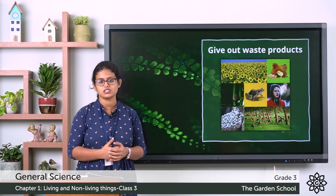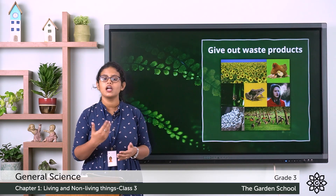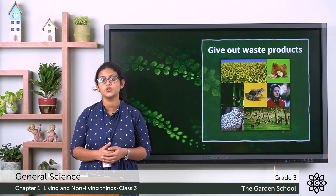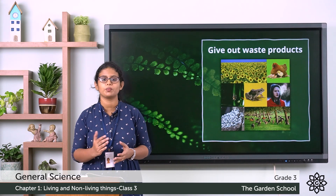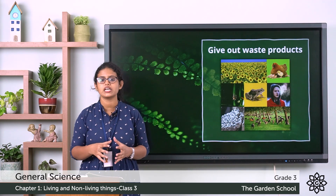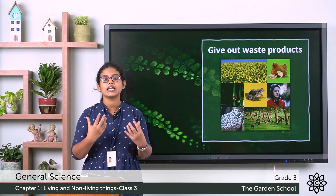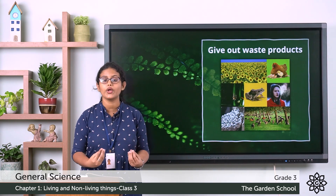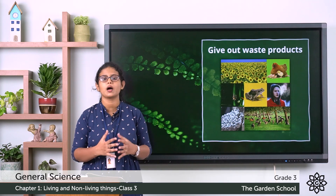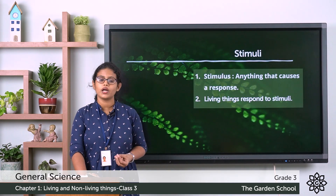What about plants? A plant is a living thing — it excretes oxygen during daytime and carbon dioxide during night time through stomata. Stomata are the tiny pores present on the leaves. So all living things give out waste products because waste is harmful for the body and needs to be removed.